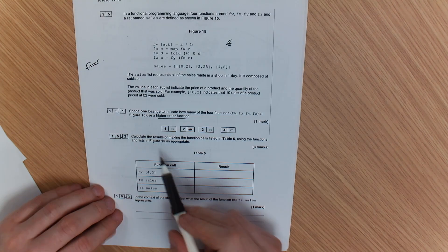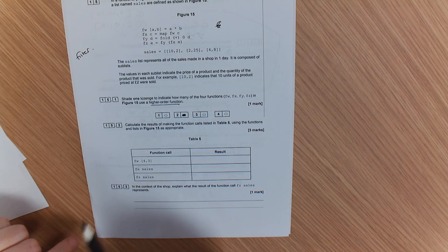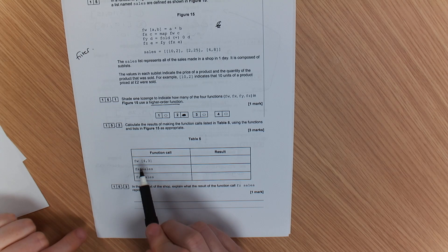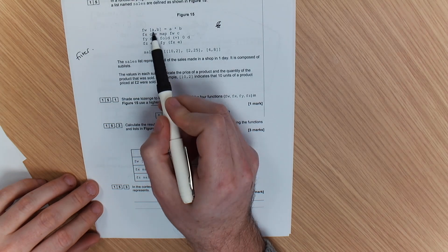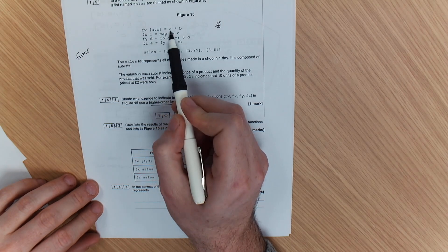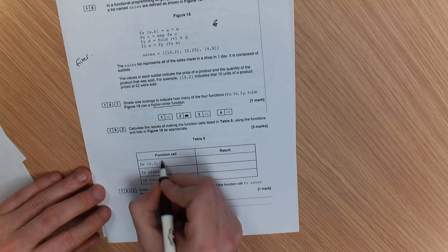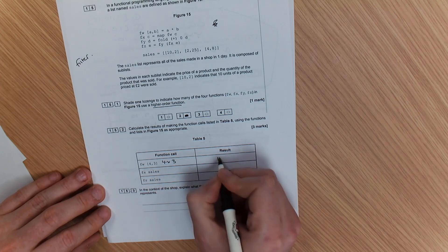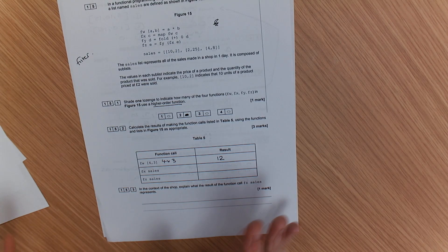Now, you need to calculate the results of making the function calls listed in this table here using the function. So we've got FW, and the two parameters that go in are 4 and 3. Well, FW(4, 3), so that would be 4 times 3. Well, 4 times 3, we know the result is 12. So it's not a list, we don't need any brackets.